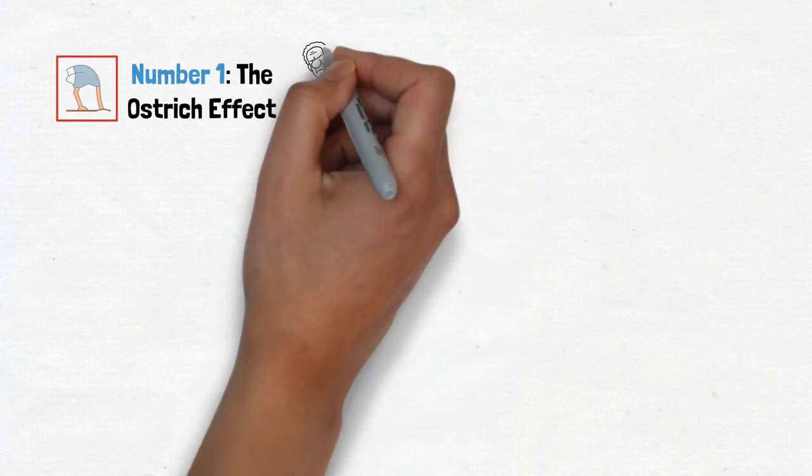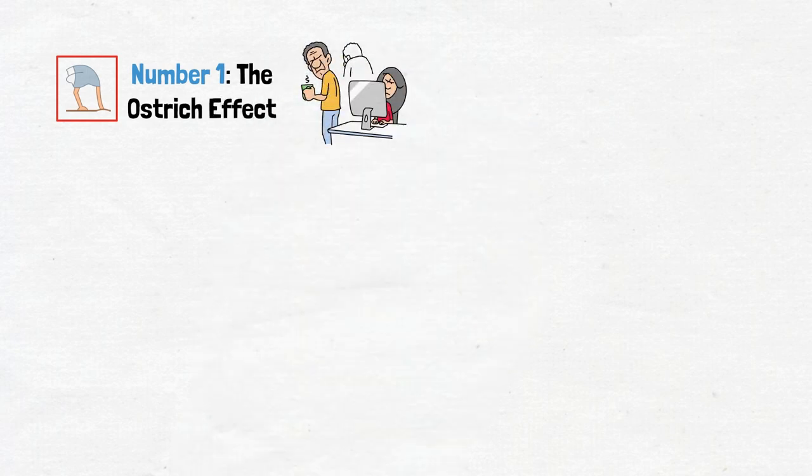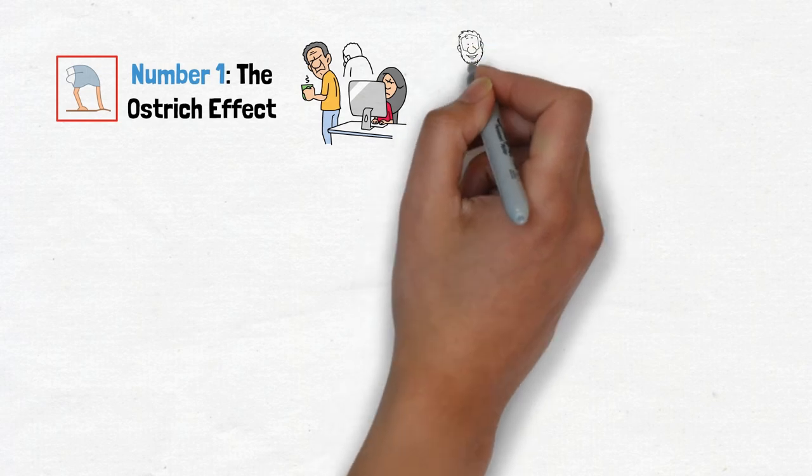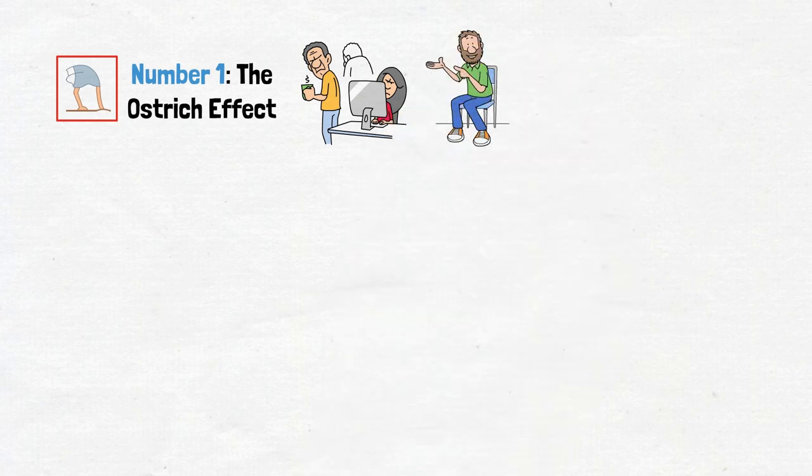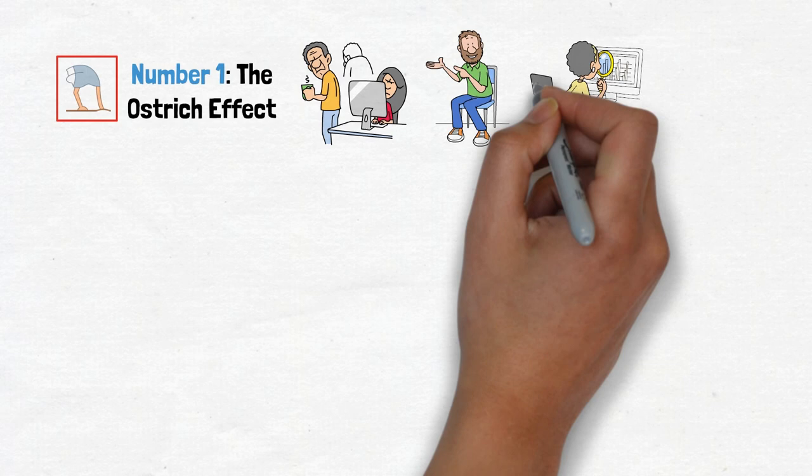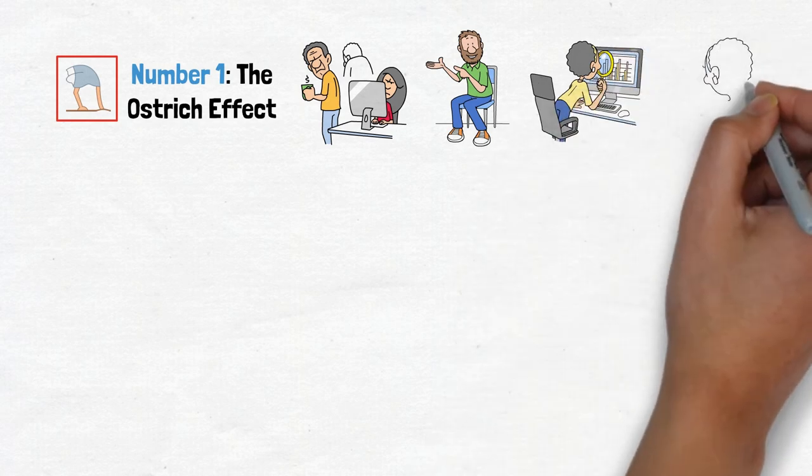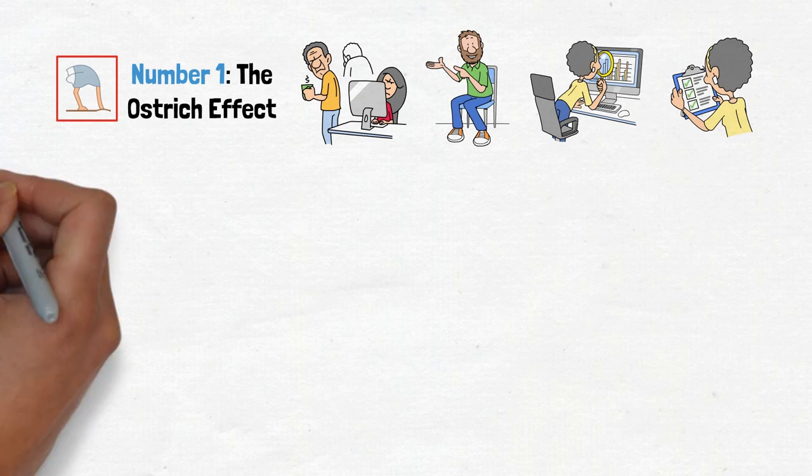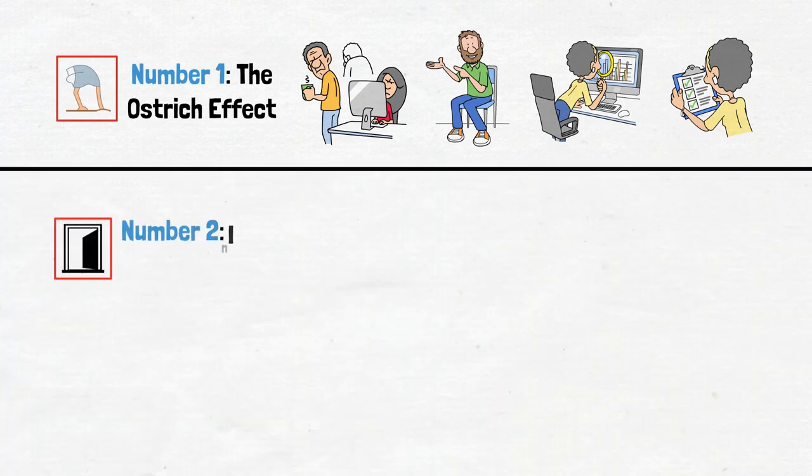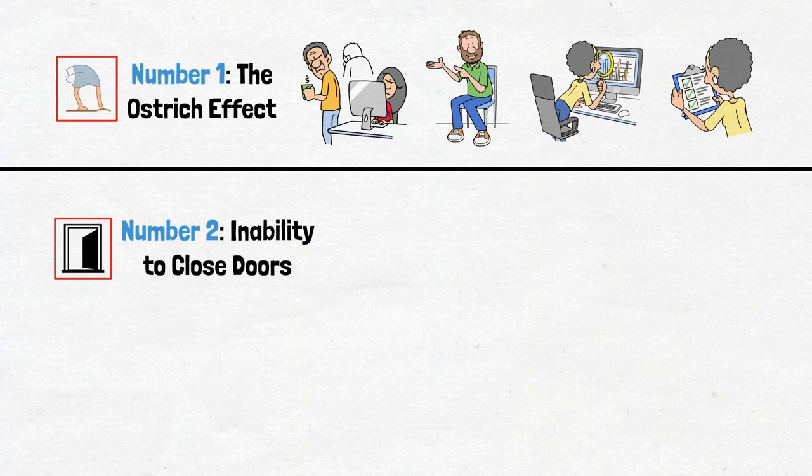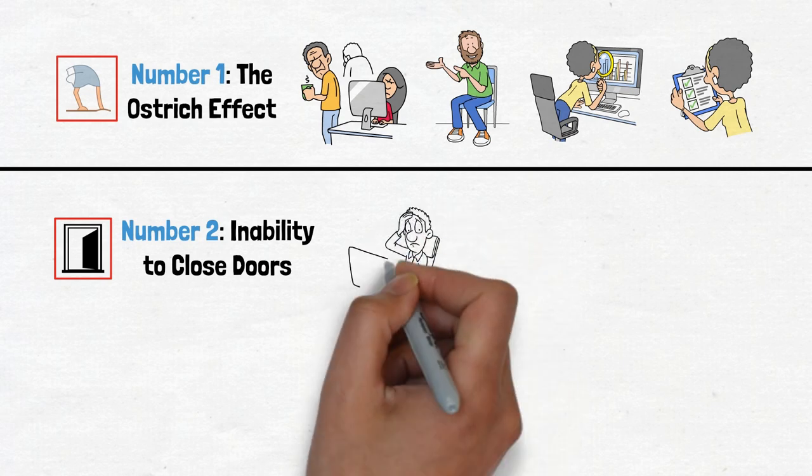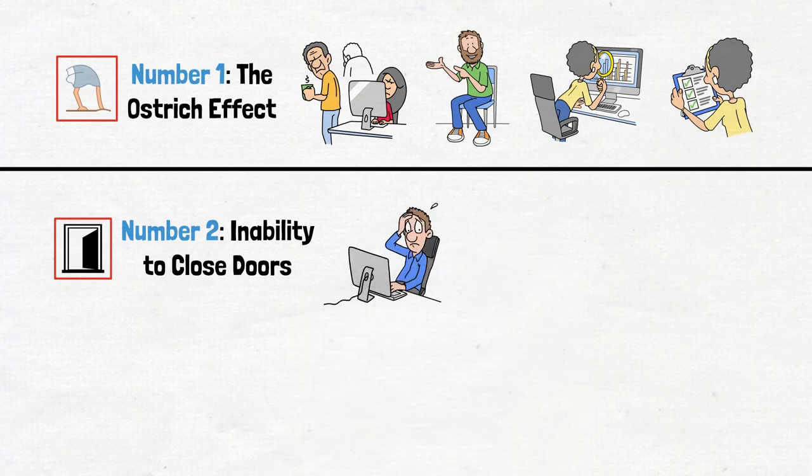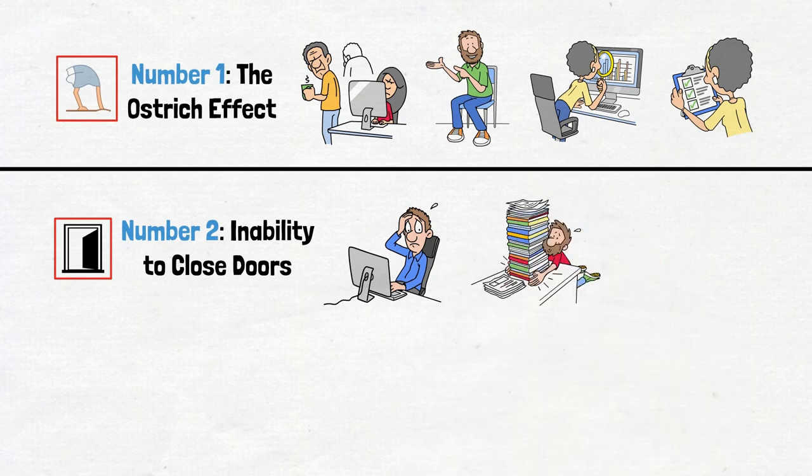Number one, the ostrich effect. Ever find yourself avoiding negative information like an ostrich burying its head in the sand? That's the ostrich effect, but fear not. Face the music and review your situation regularly, even when it's uncomfortable. Number two, inability to close doors. Ever struggled to make a decision because you fear missing out on other opportunities? Focus on one thing at a time for better results. It's all about quality over quantity.